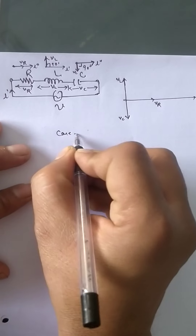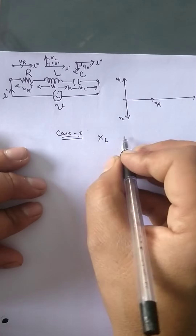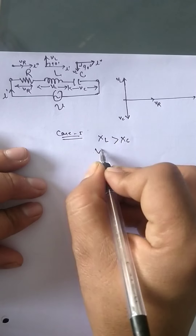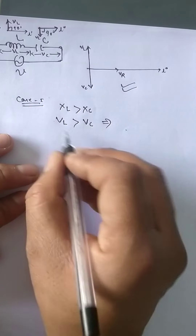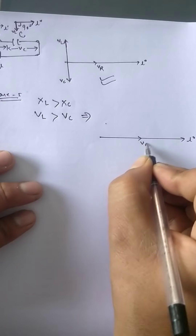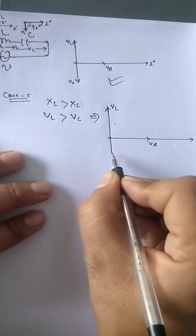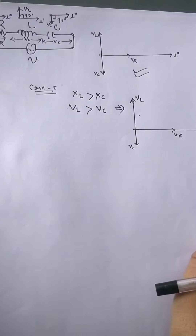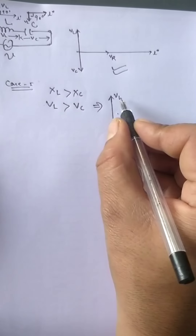Now there are two cases. In case one, this is our general phasor diagram. Taking the current as reference, Vr is in the same phase. In this case, Vl is greater than Vc — Vl is shown above the axis and Vc is below. This is the first case phasor diagram where Vl is more than Vc.